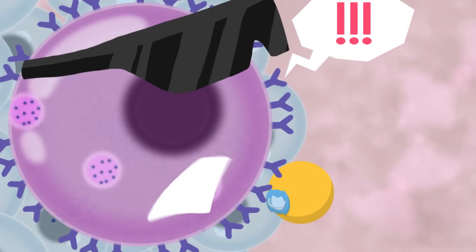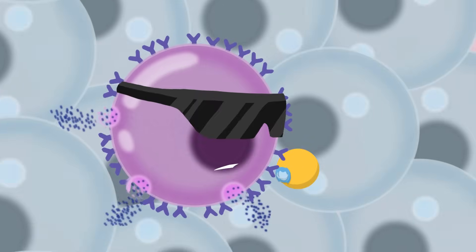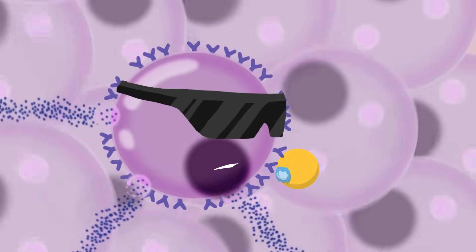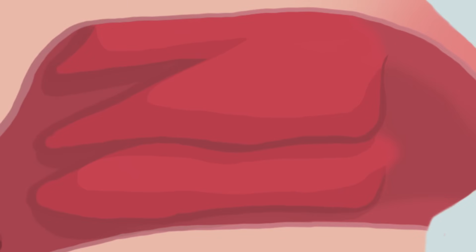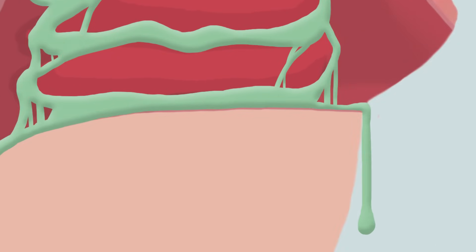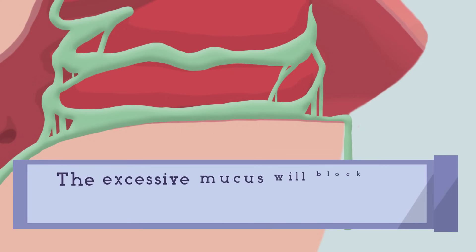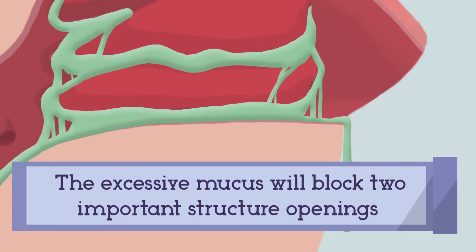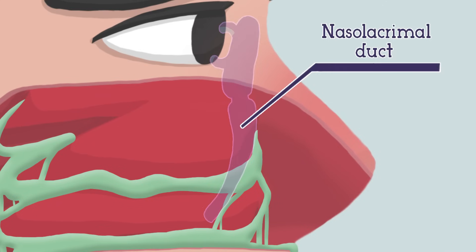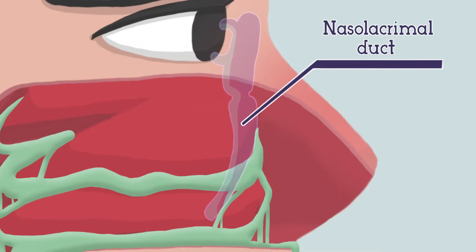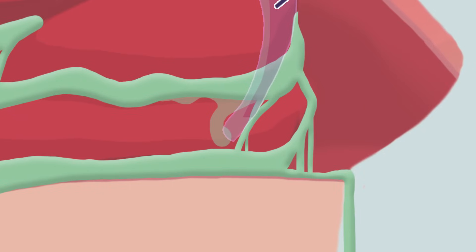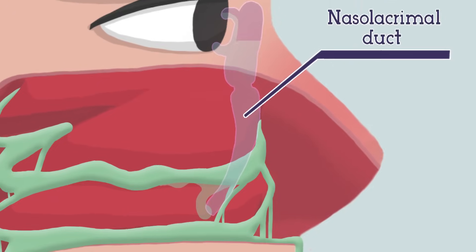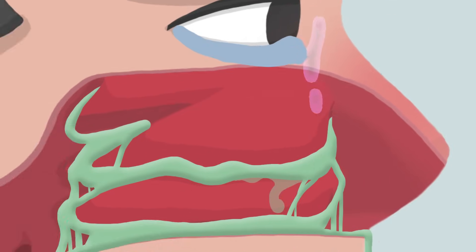It signals to all surrounding cells by releasing histamine. Histamine will now cause inflammation and swelling of the nasal mucosa, which will then cause excessive mucus production. This results in nasal drip. This excessive mucus production will block two very important structures opening into the nose. The first is the nasolacrimal duct, whose purpose is to drain tears from the eyes into the nose, but once blocked by excessive mucus production, you will start having watery eyes.